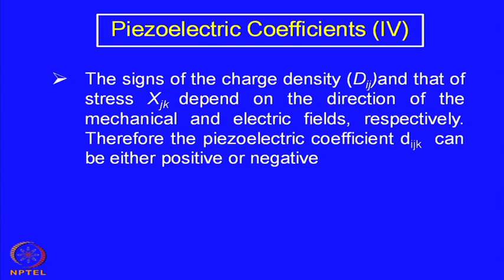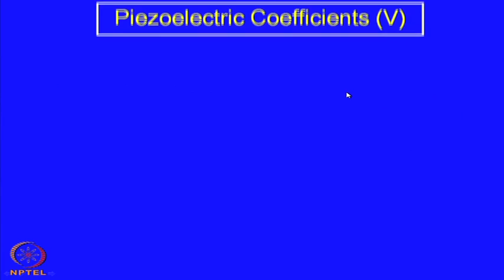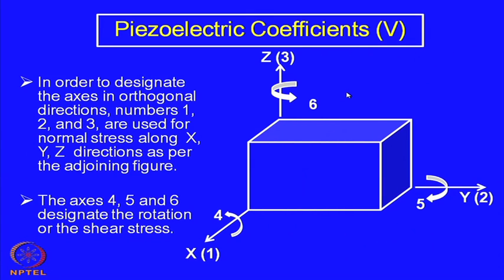The signs of the charge density D_ij and the stress X_jk depend on the direction of the mechanical and electric fields respectively. Therefore, the piezoelectric coefficient d_ijk can be either positive or negative, because we have different possibilities of stress as well as flux density. The subscripts come from consideration of designating the axes in orthogonal directions.